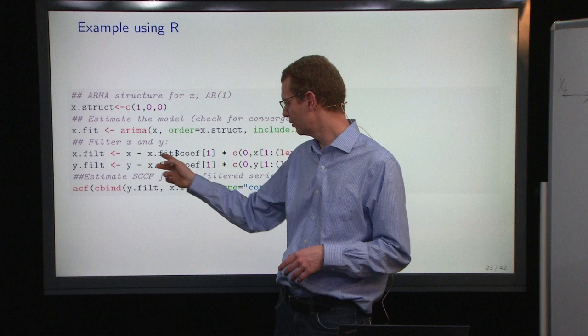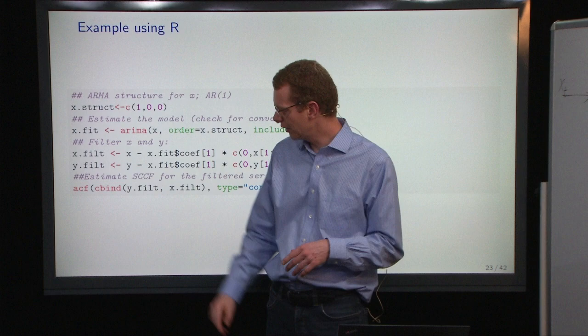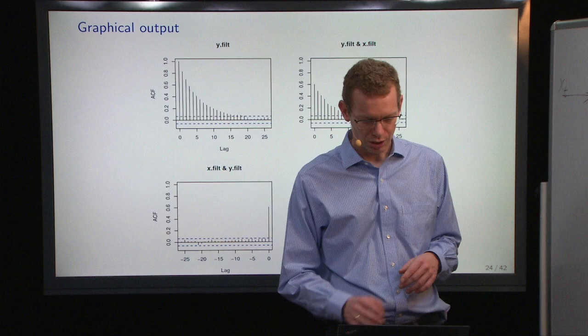Basically what we have to do to do the filtering is to say that we take x minus this estimated coefficient times the previous x that we have, and then we do the same thing, take that coefficient, and then we take the previous y. Then we have x and y filtered.